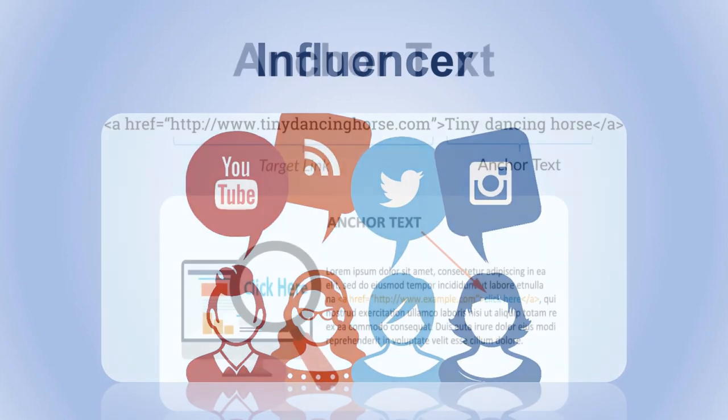And then we have Anchor Text. The Anchor Text is the piece of text that actually contains a link, so it becomes clickable. It appears as a part of the content very normally, but when you roll your mouse over it, you can actually click it. So you can get redirected to another page or even another website.